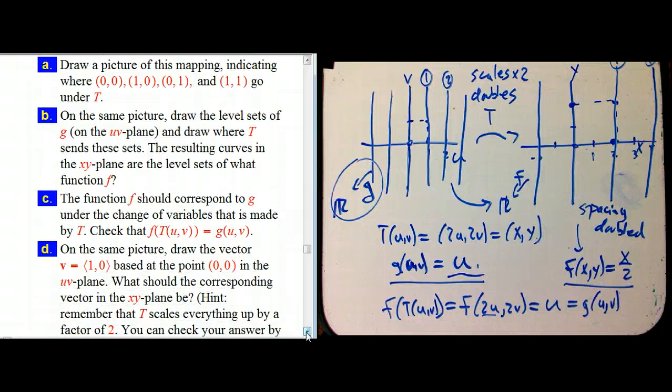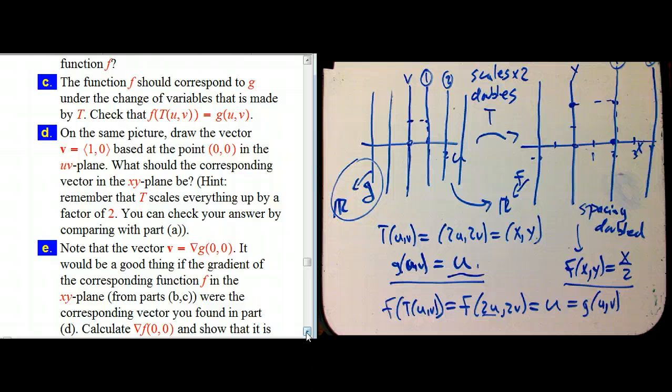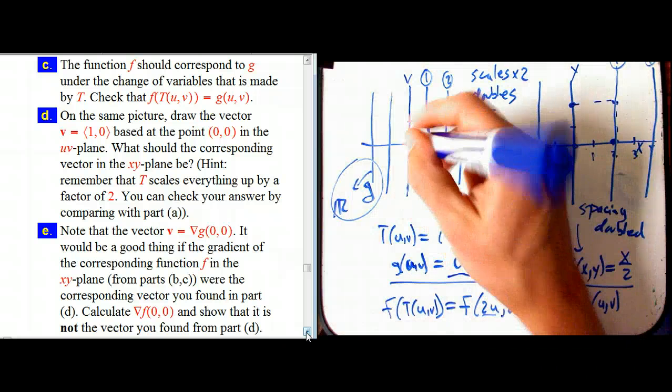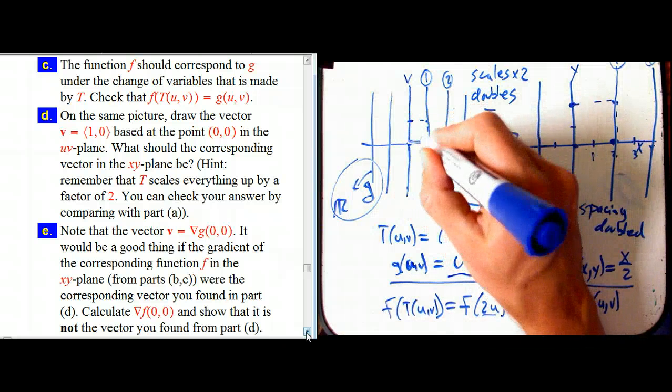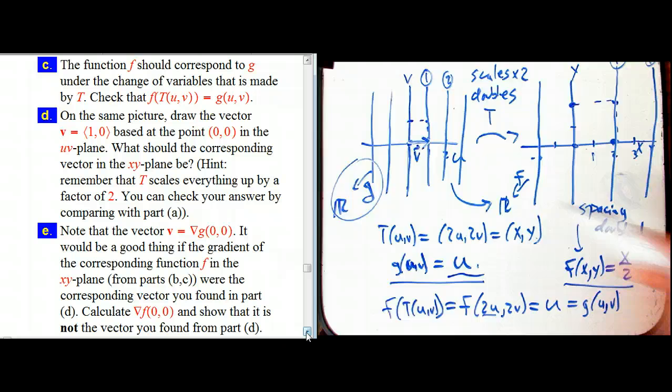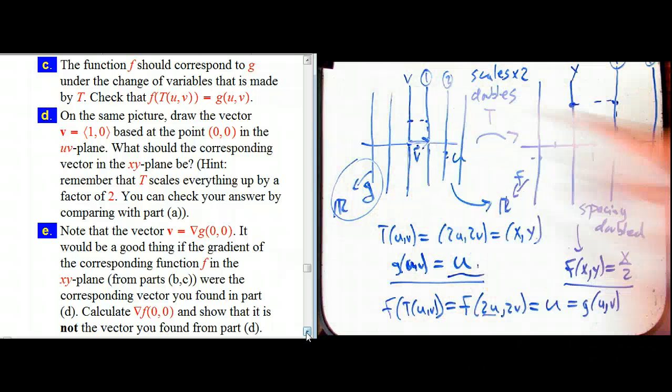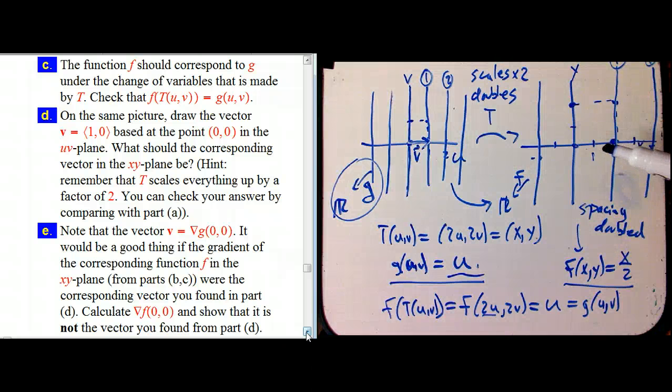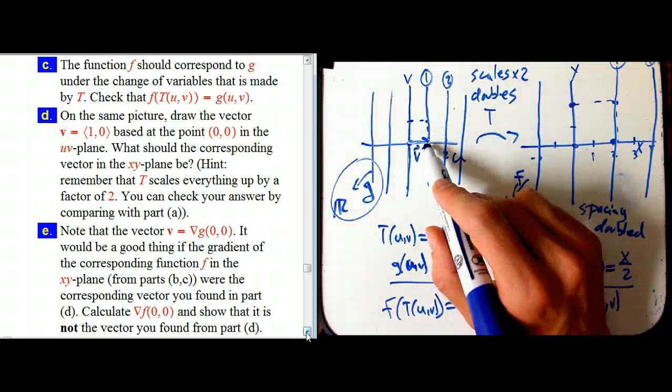So what about vectors? If we're going to think about gradients, we want to think about how vectors transform under this transformation. And that's easy. Let's draw v equals 1, 0, just i, really. There's v with an arrow. It's different from the variable v here.